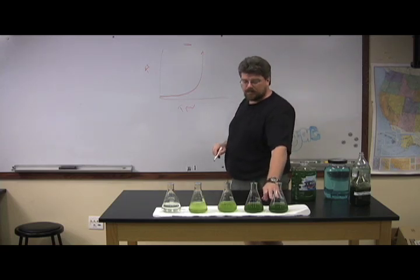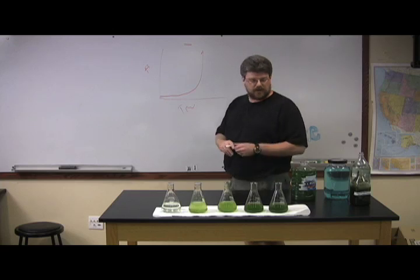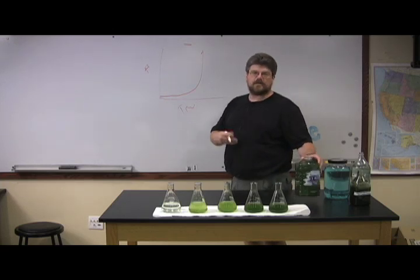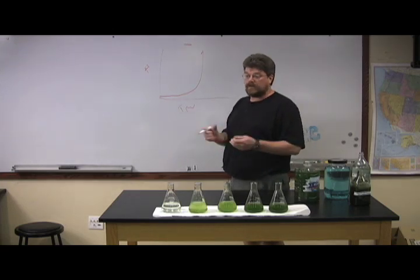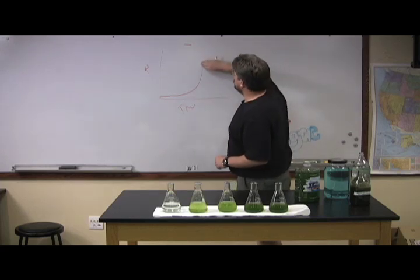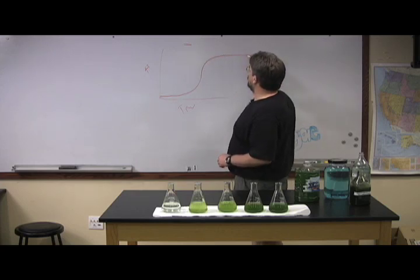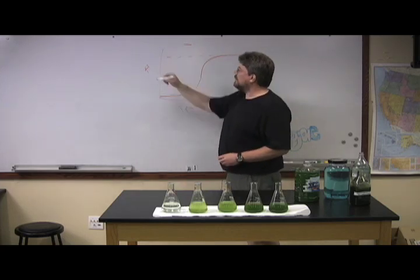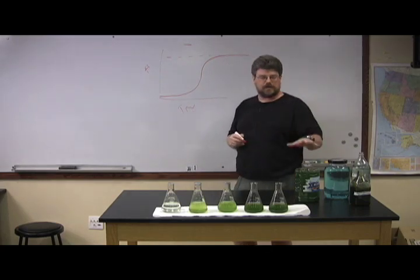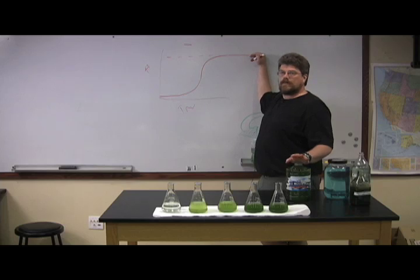As they start hitting a carrying capacity, if something starts becoming a limiting factor, they'll start slowing down. Generally, the limiting factor is light because you're bubbling all the air it needs and you can add fertilizer. What you end up with is a curve that starts leveling out. That level spot we call the carrying capacity, where your growth is basically going to come to a stop. This will be the maximum amount of cells found at this point.